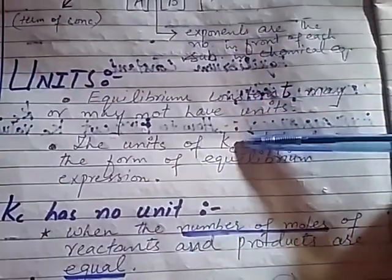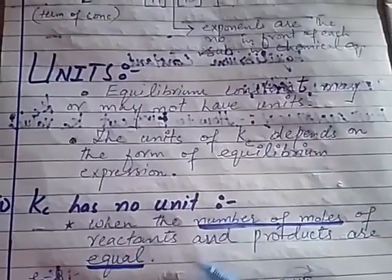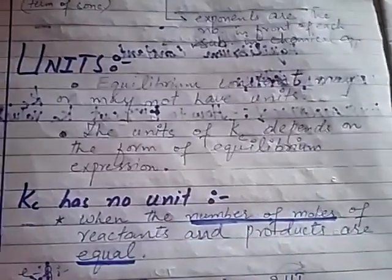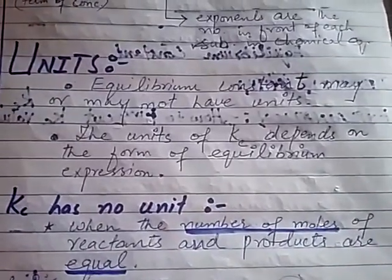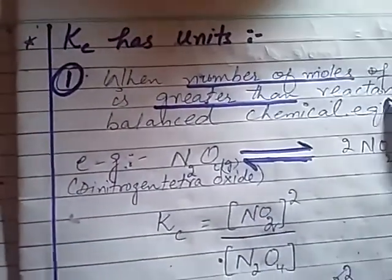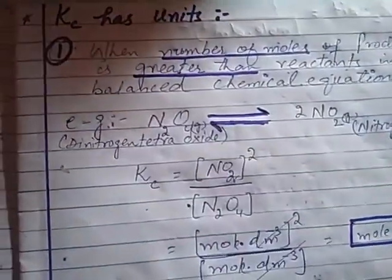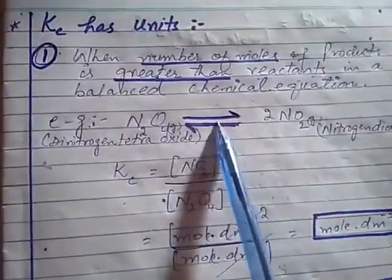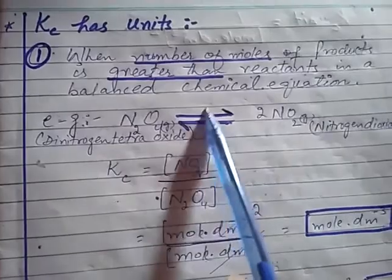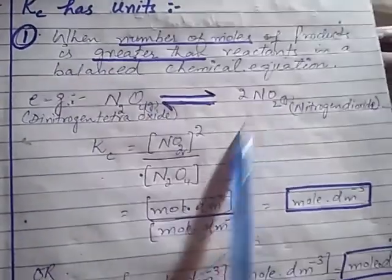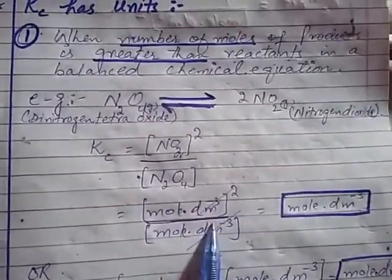In the previous lecture, we discussed the units and the conditions — in which case Kc has no unit, and then we found out that Kc has a unit. In the case where Kc has a unit, we have two conditions. One is that the number of moles of product is greater than the reactant, which we have already explained — you can see the previous video.